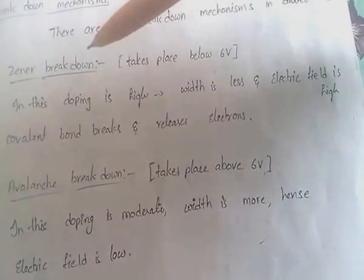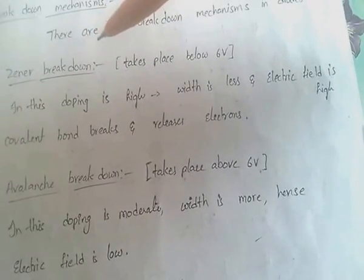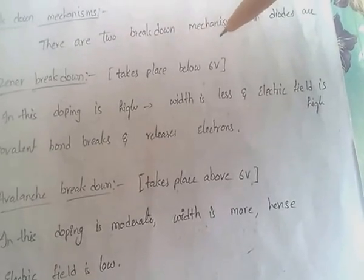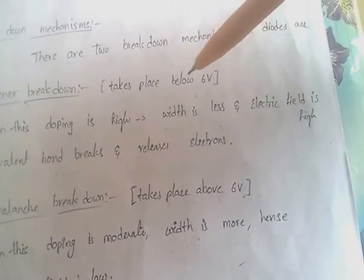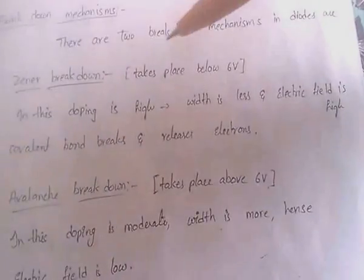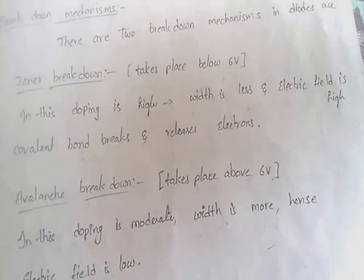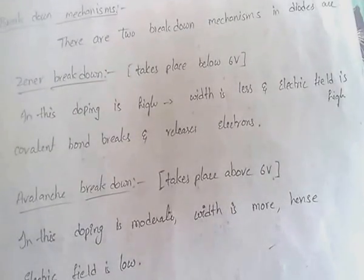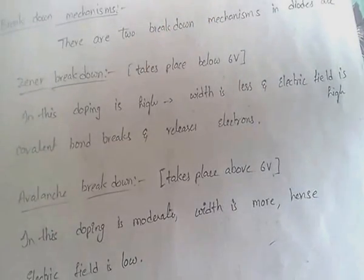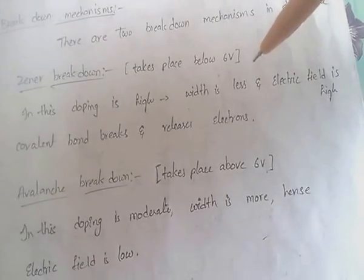Zener breakdown occurs below 6 volts. When the doping is very high, the width of the depletion region is very less, meaning the electric field is very high. Due to this high electric field, the covalent bond breaks and releases electrons. This is called Zener breakdown.